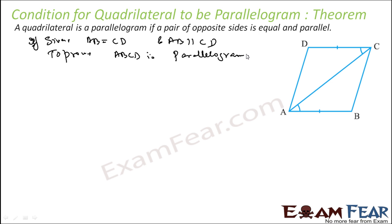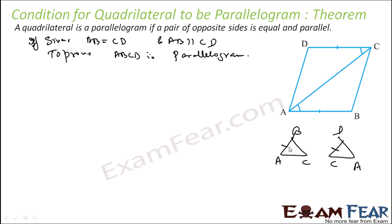Let's consider triangle BAC and triangle DCA. If we can prove these two triangles are congruent, we can prove that the sides are parallel. It is given that DC is equal to AB. AC is equal to CA — a common side. And angle CAB equals angle DCA — these are given.